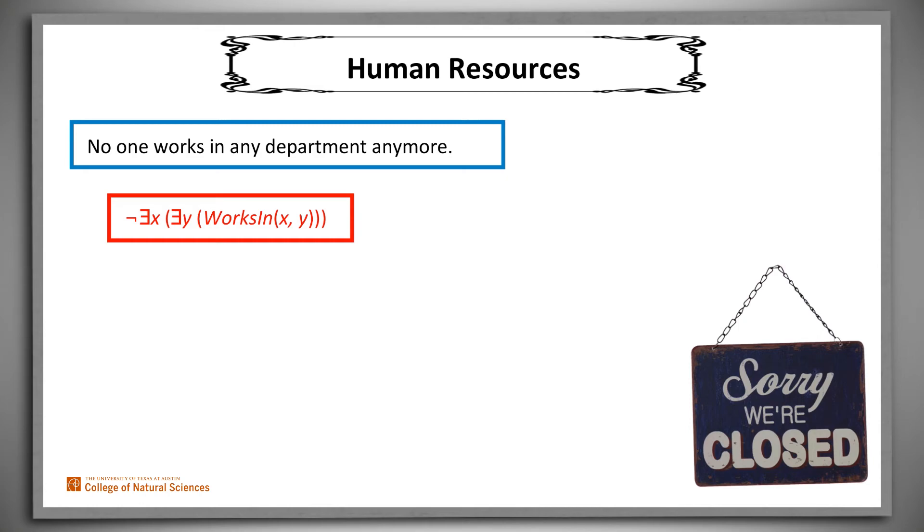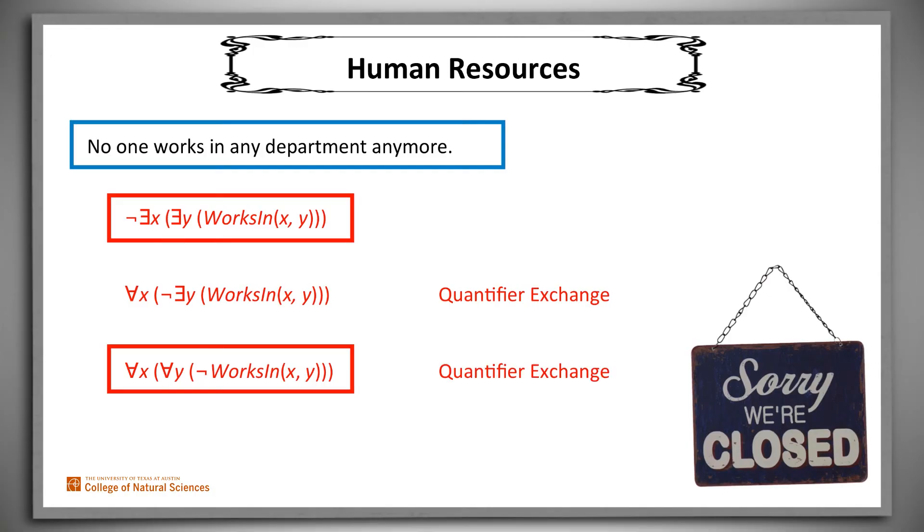Alternatively, we could write: for all x and y, it's not the case that x works in y. Again, we can see why these two claims are equivalent. We apply quantifier exchange first on there exists an x and then on there exists a y.